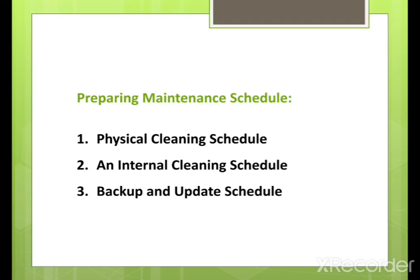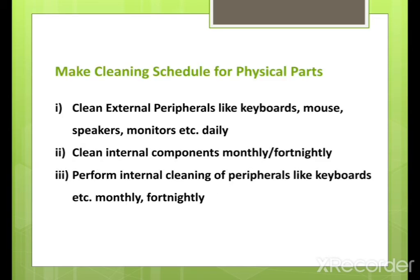This computer maintenance schedule may include three types: First, a physical cleaning schedule for performing physical cleaning of the computers — cleaning outer parts like mouse, keyboard, etc. Second, an internal cleaning schedule for performing actions like cleaning junk files and updating programs at the software level. Third, a backup and update schedule — determining after how many days to take the backup and check for new software updates.